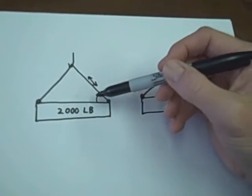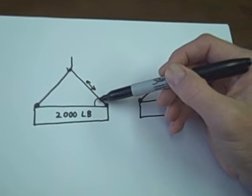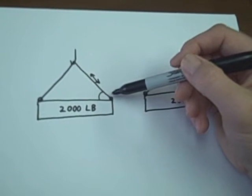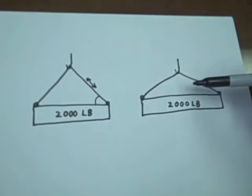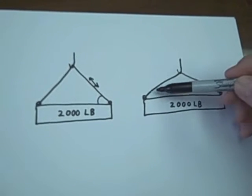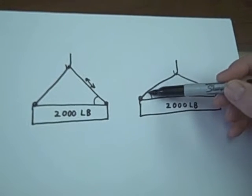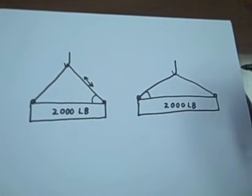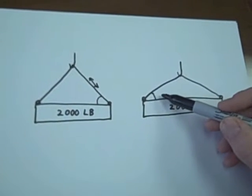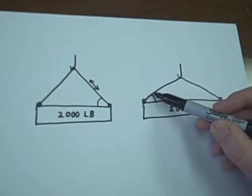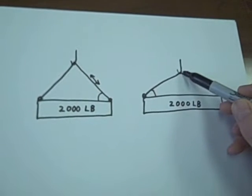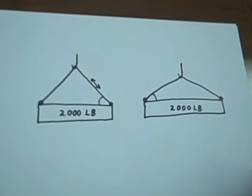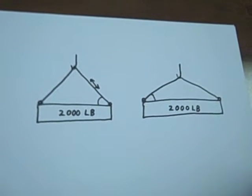We can see this angle is less than 90 degrees and this angle is even less than that one. So as the sling angle gets smaller, the forces that are exerted in this sling increase. They get larger.